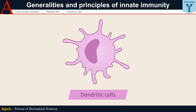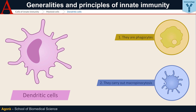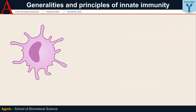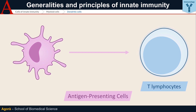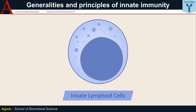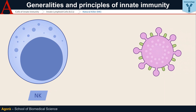Dendritic cells, so-called because of the numerous branches of their cytoplasm, are the most recently discovered cells. They are phagocytes and carry out abundant macropinocytosis — that is, reabsorption of interstitial fluid to detect pathogens and their components. Dendritic cells are the most important APCs, able to effectively activate T lymphocytes and trigger adaptive responses. Innate lymphoid cells, ILCs, are lymphocytes that are unable to specifically recognise an antigen but have an innate action. The best known ILCs are the natural killer NK cells — very large cells crucial in the innate response against viruses.